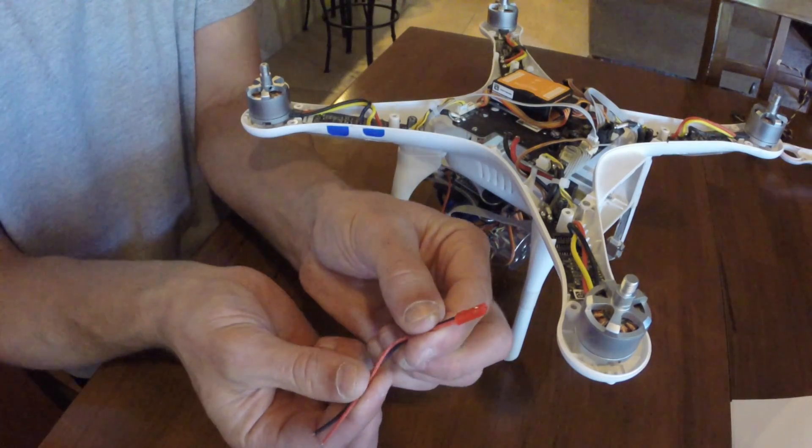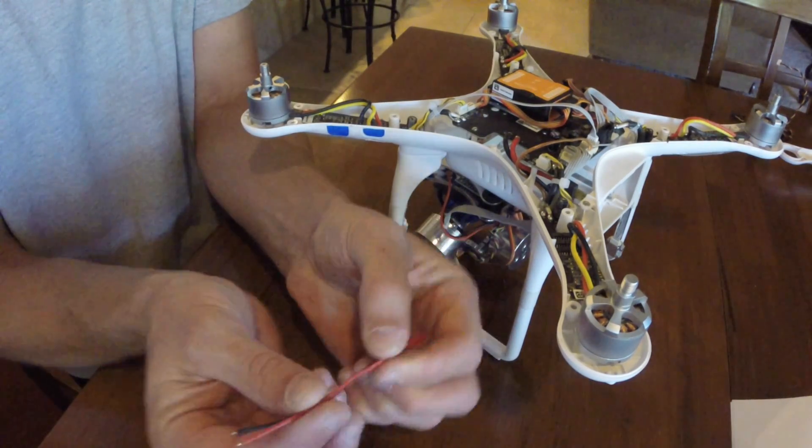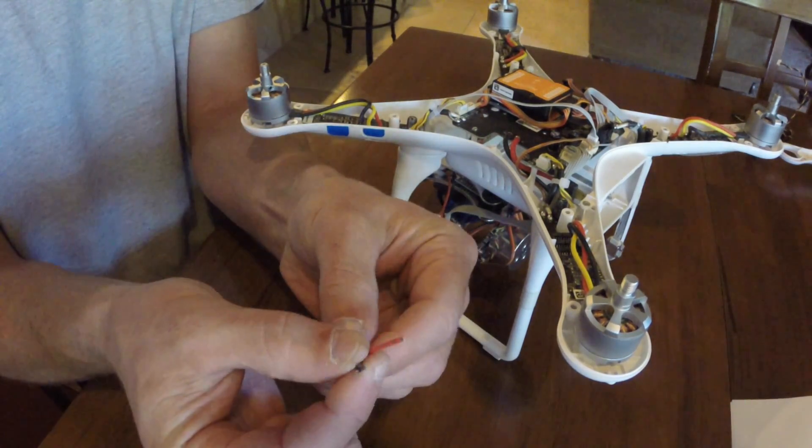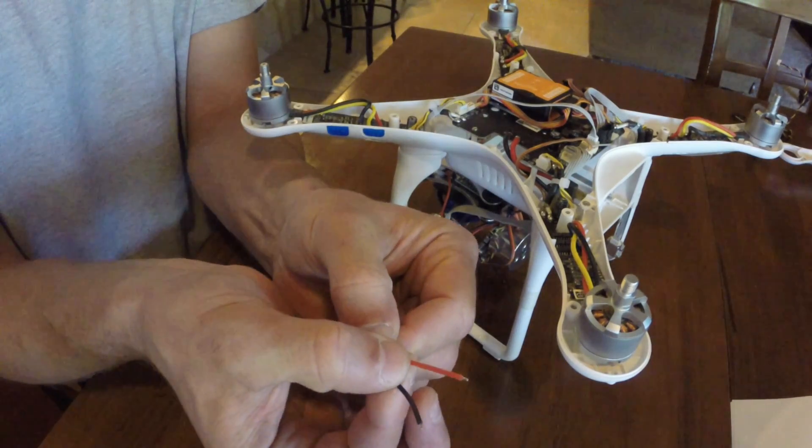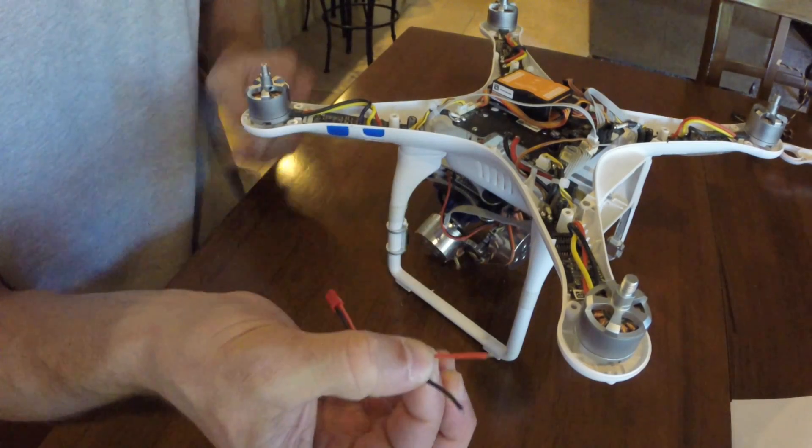Now you're going to grab your power cord. This is going to be soldered onto the Phantom's power source with red to red and black to black.